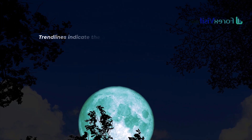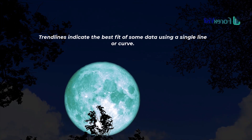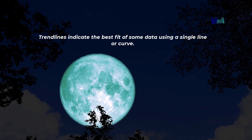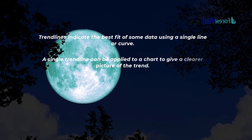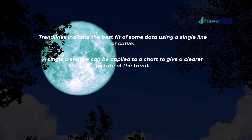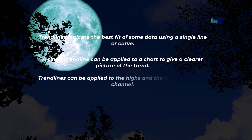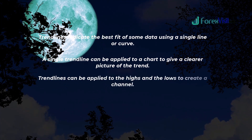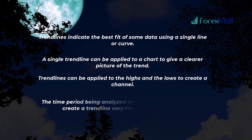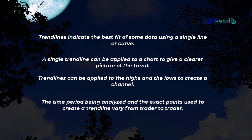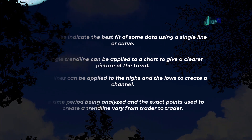Trend lines indicate the best fit of some data using a single line or curve. A single trend line can be applied to a chart to give a clearer picture of the trend. Trend lines can also be applied to both the highs and lows to create a channel. The time period analyzed and the exact points used to create a trend line vary from trader to trader.